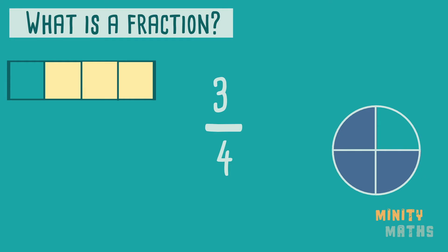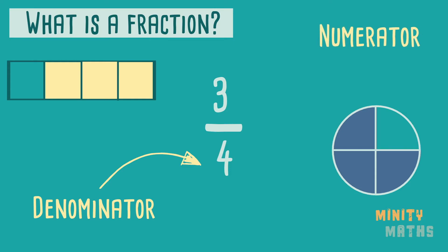The number at the bottom of the fraction is called the denominator and shows us how many equal parts we have divided the whole up by. In this case we have divided the whole up into four equal parts. The numerator is the number shown at the top and shows us how many of these equal parts we actually have. In this case we have three out of the four equal parts as three of the four parts are shaded. In other words we have three quarters.